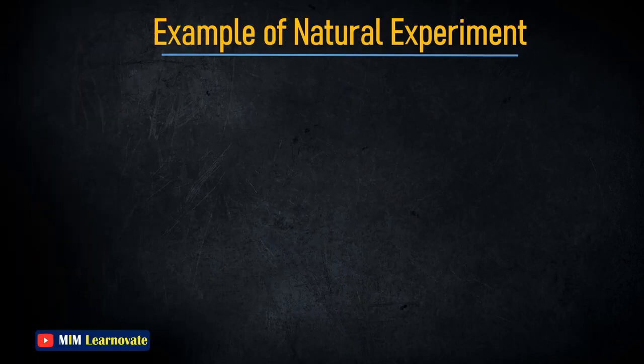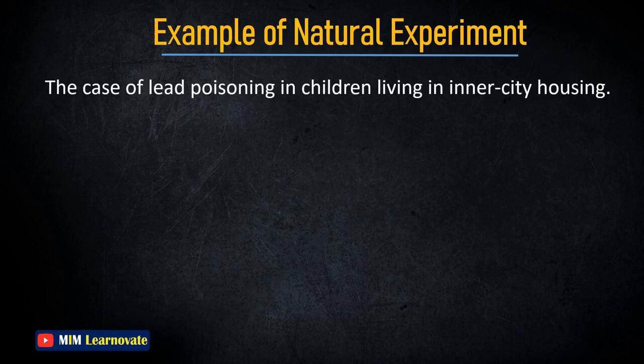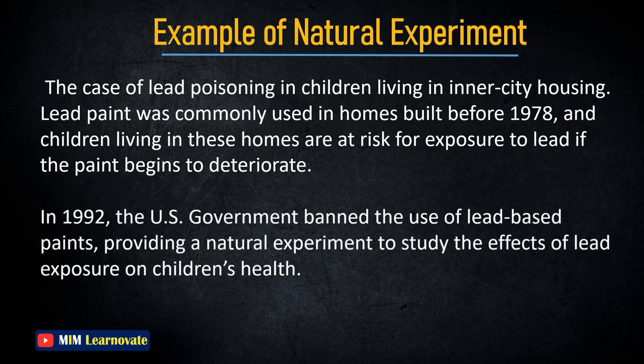Example of a Natural Experiment: One well-known example is lead poisoning in children living in inner-city housing. Lead paint was commonly used in homes built before 1978, and children in these homes are at risk of exposure if the paint deteriorates. In 1992, the US government banned the use of lead-based paint, providing a natural experiment to study the effects of lead exposure on children's health.